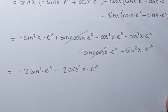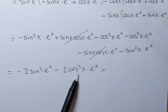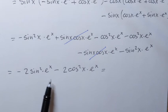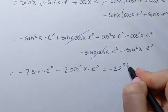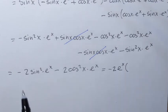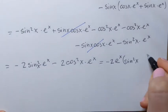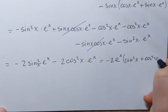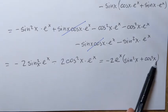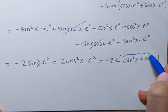Now let's see what we have. We have some opposites — the sine x cosine x times e to the power x terms cancel. We also have like terms to combine: the two terms involving sine squared and e to the power x give negative two sine squared x times e to the power x, and the two cosine squared terms give minus two cosine squared x times e to the power x. We can factor out negative two times e to the power x, leaving sine squared x plus cosine squared x, which by the Pythagorean identity equals one.